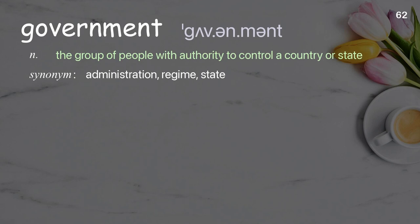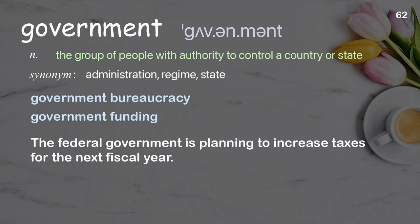Government: the group of people with authority to control a country or state. Examples: government bureaucracy, government funding. The federal government is planning to increase taxes for the next fiscal year.